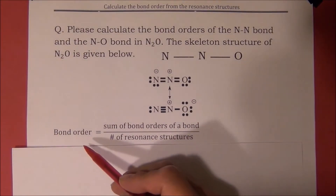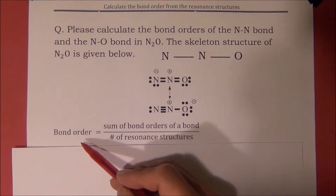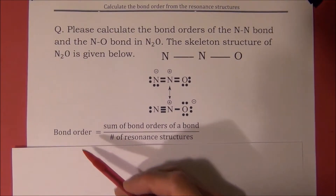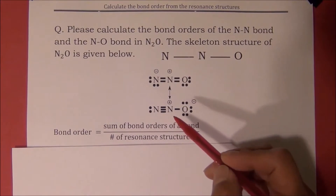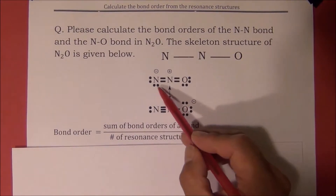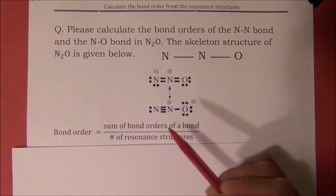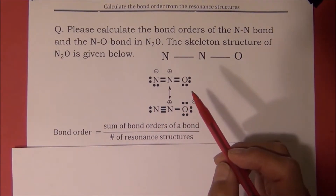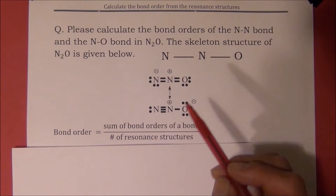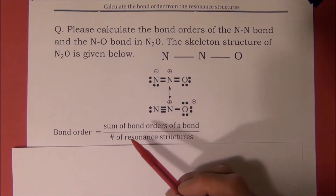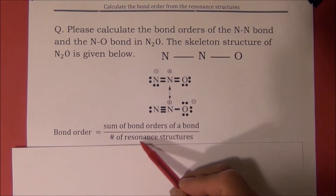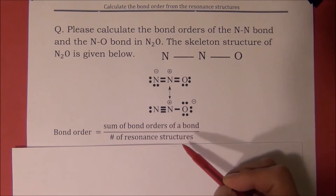To calculate the bond order of a bond, we have to add the bond order of the same bond from all resonance structures together, then divide it by the total number of resonance structures.